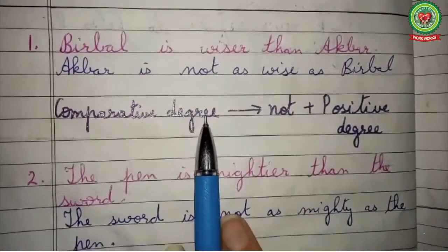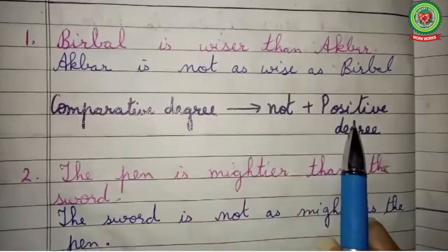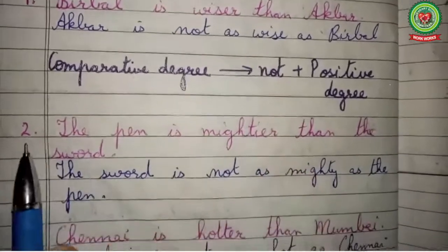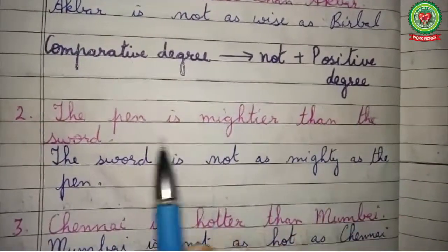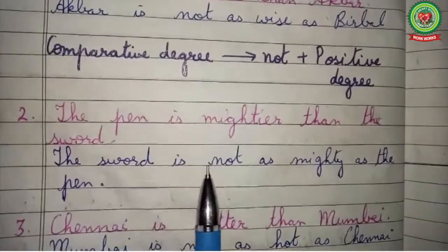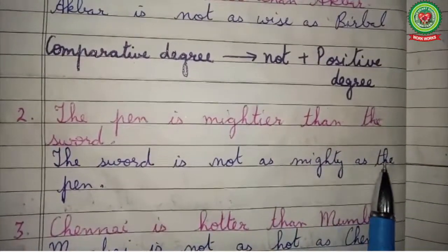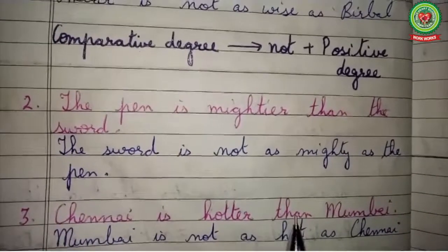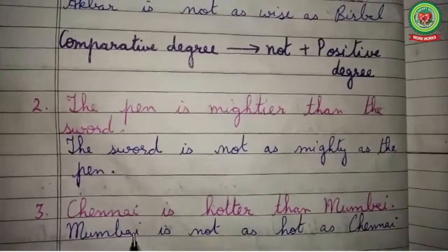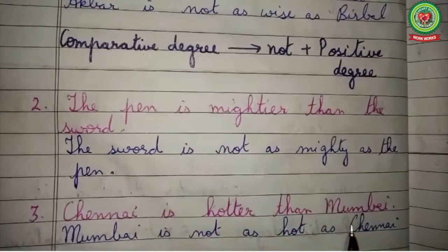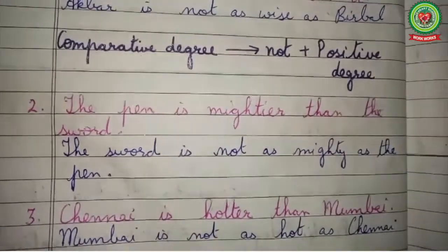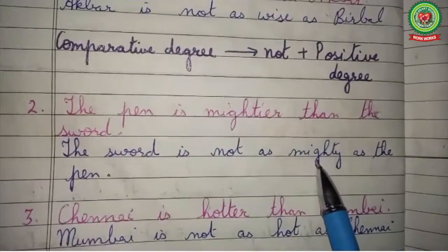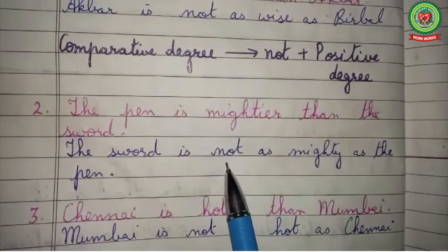The rule is that comparative degree gets converted to positive degree and 'not' is used before it. Number two: 'The pen is mightier than the sword' becomes 'The sword is not as mighty as the pen.' Number three: 'Chennai is hotter than Mumbai' becomes 'Mumbai is not as hot as Chennai.' In these sentences the comparative degree gets converted to the positive degree by adding 'not' before it.